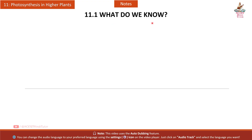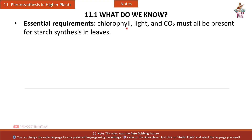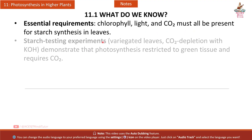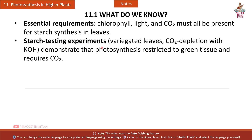Section 11.1 — What do we know? Essential requirements — chlorophyll, light, and CO2 — must all be present for starch synthesis in leaves. Starch testing experiments using variegated leaves and CO2 depletion with KOH demonstrate that photosynthesis is restricted to green tissue and requires CO2.